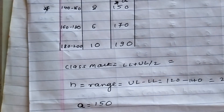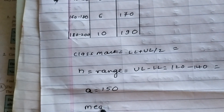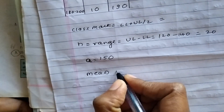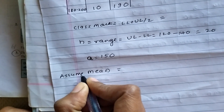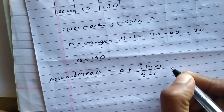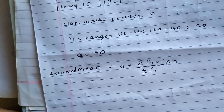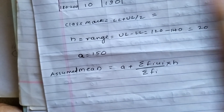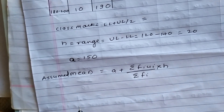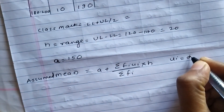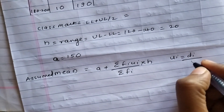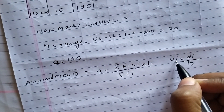Before finding the mean, let me write the formula so you know what to calculate. The mean by assumed mean method is: mean equals A plus (summation of FI into UI divided by summation of FI) into H. Here A is 150 (class mark of modal class), FI is known, H is the range which is 20, and we need to find UI. UI equals DI divided by H, where DI equals XI minus A.